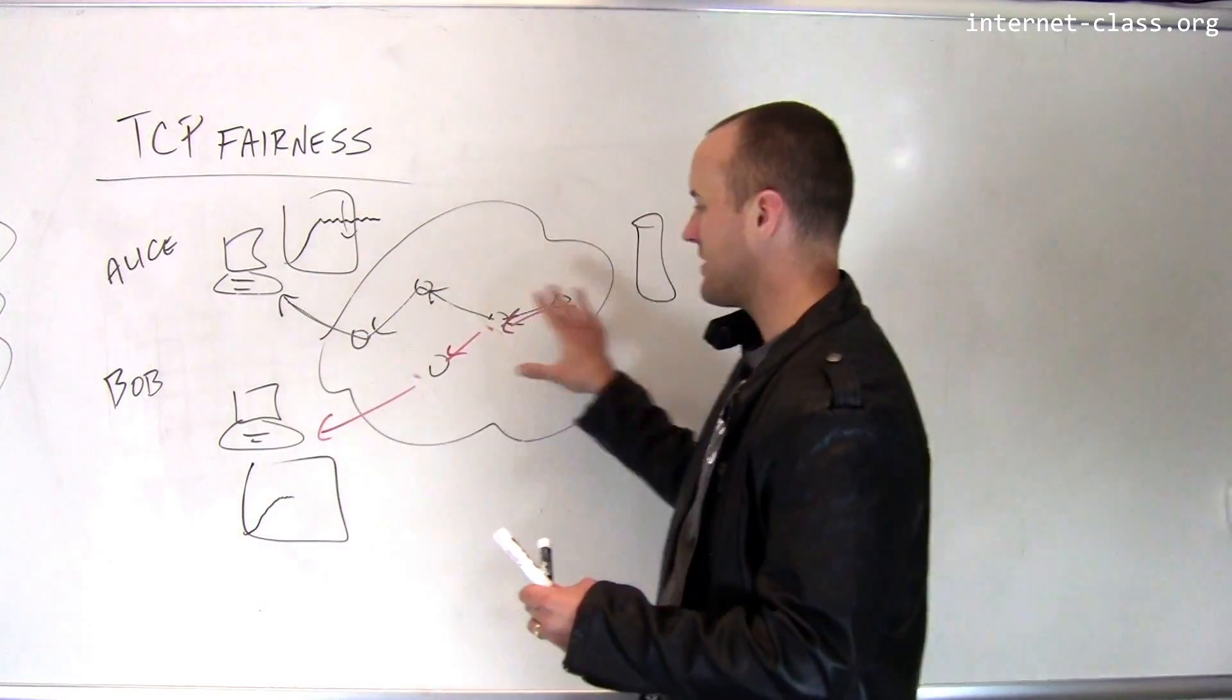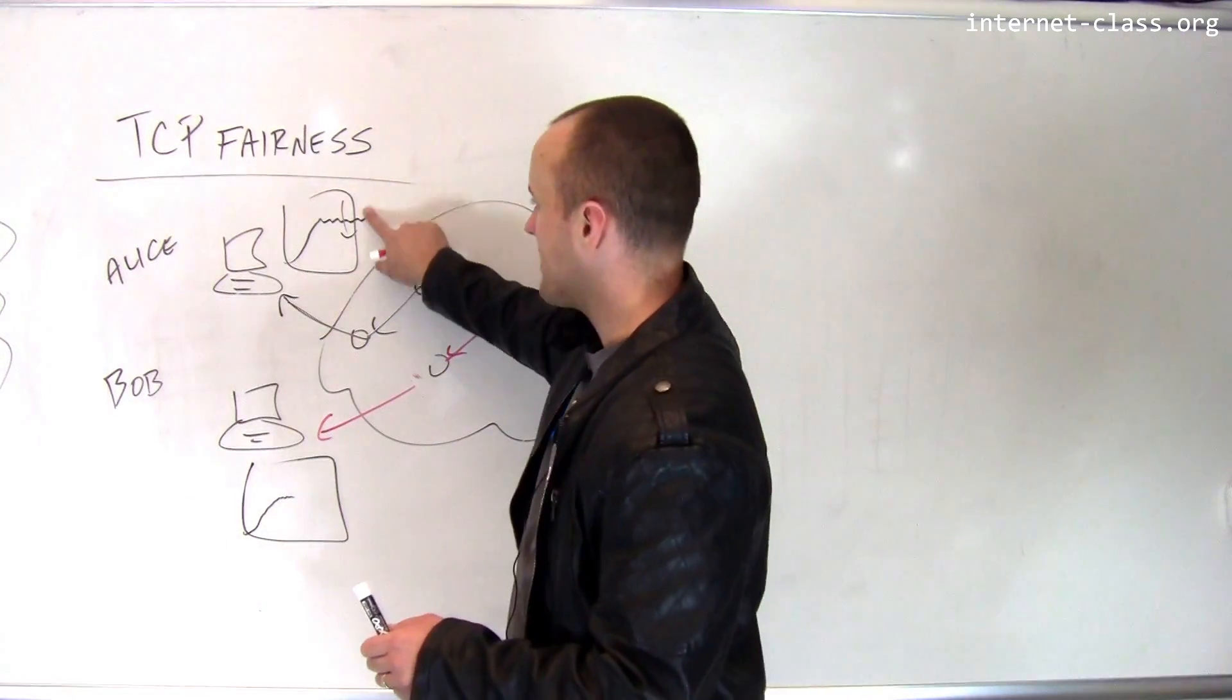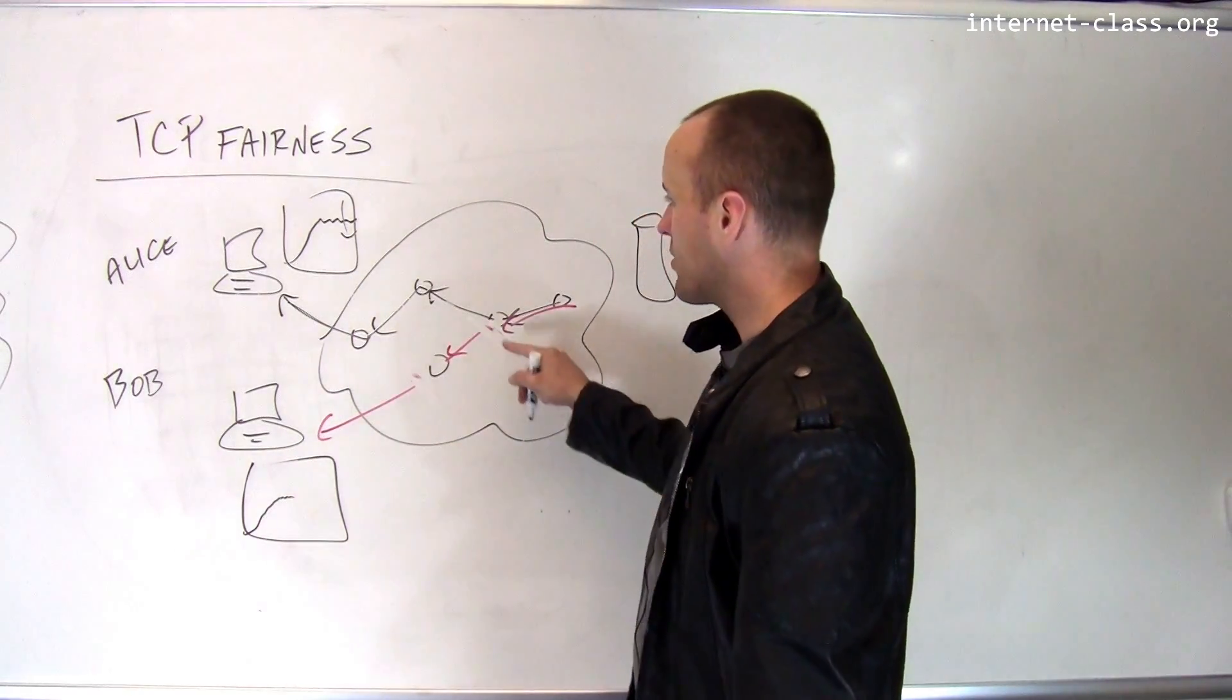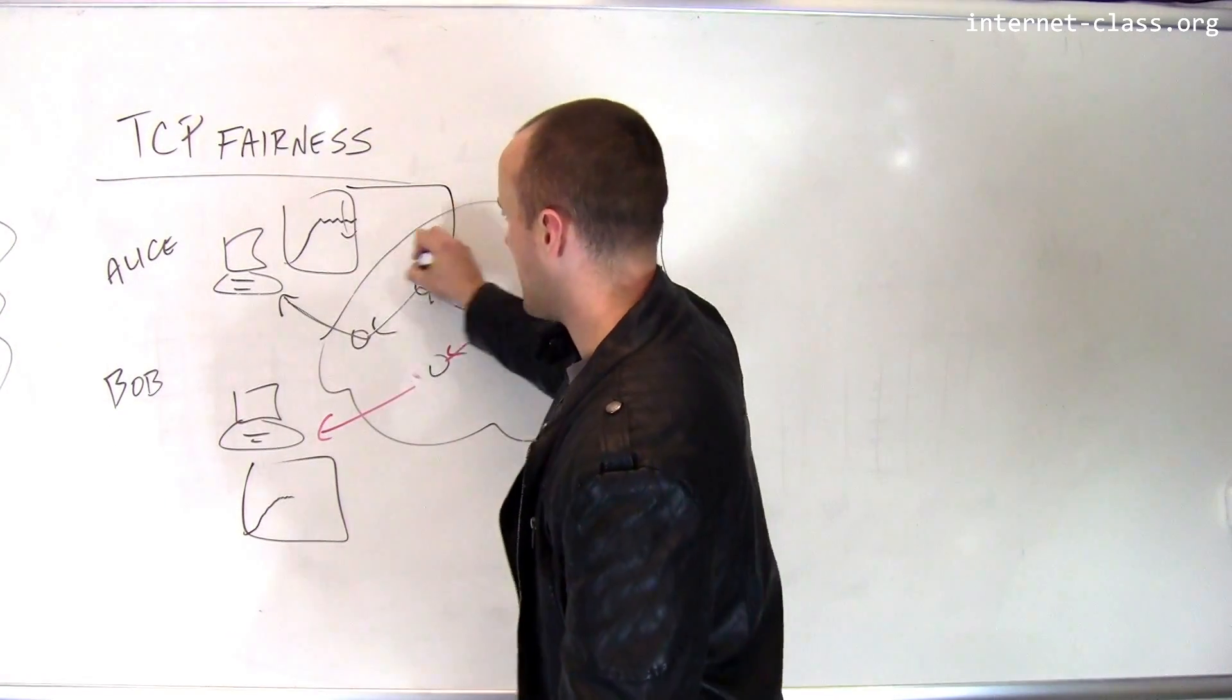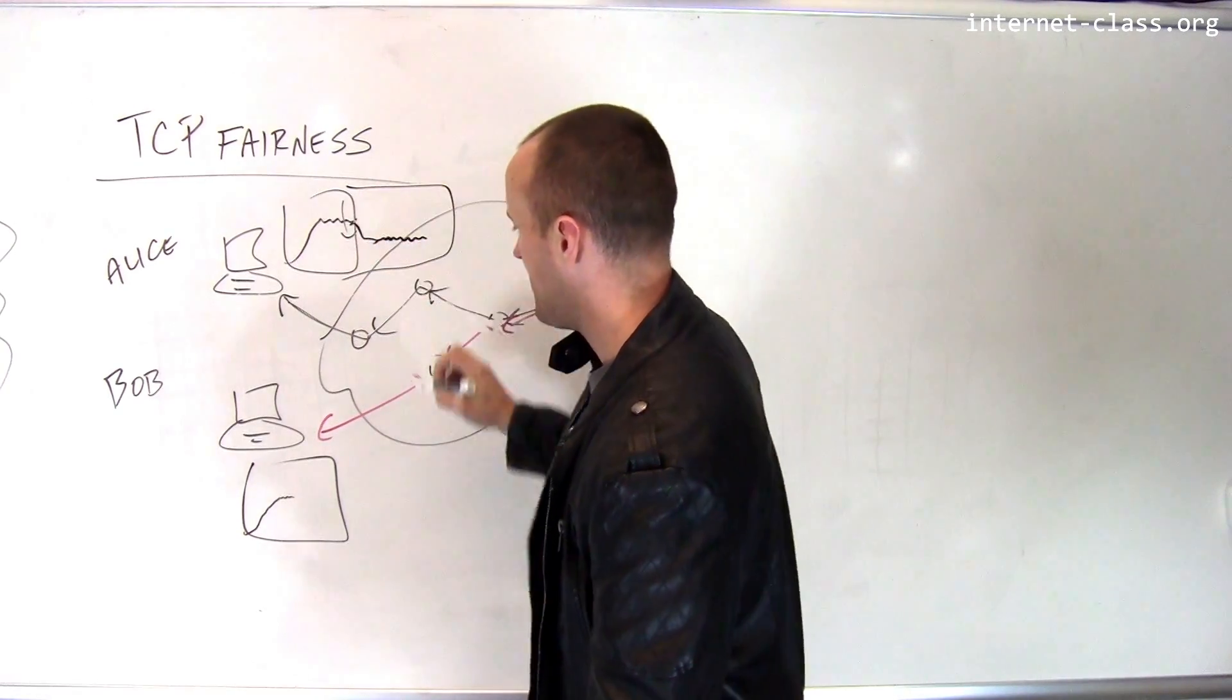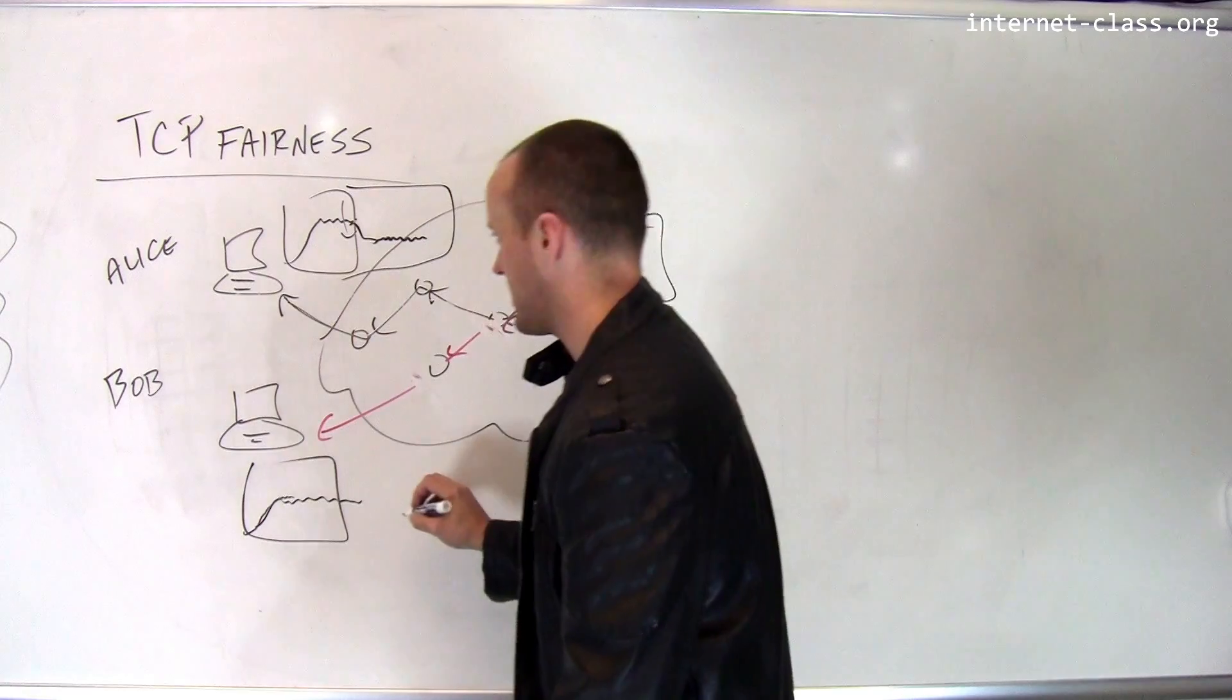The fact that Bob has started to create extra traffic in the network is going to cause Alice's speed to drop because Alice's TCP implementation is now going to start to see packet loss that's being caused by Bob's connection. So once Bob starts up, the speed of her connection is going to drop. And Bob's connection is going to start up, is going to cause some congestion and it's going to drop as well.